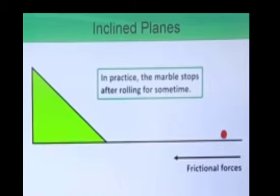To summarize, the velocity of a body increases when it rolls down an inclined plane and decreases when it rolls up. If the body rolls between two equally inclined planes, it attains the same height on both sides. If the inclination of the second plane is gradually decreased, the body rolls over a larger distance to reach the same height. When the second plane is horizontal, the body continues to move indefinitely. In practice, the body comes to rest due to friction. When the surface of the second plane is rough, the body covers less distance.